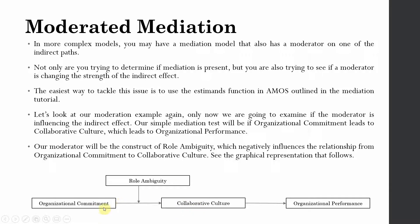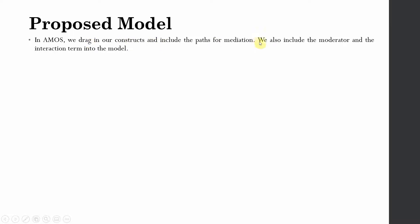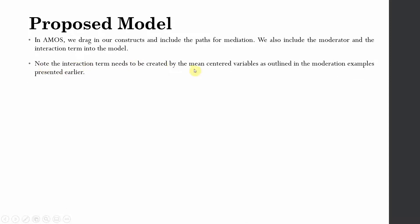My interest is to find out whether this moderator either strengthens or weakens the indirect effect. In AMOS, we drag our constructs and include the path for mediation, and also include the moderator and interaction term in the model. The process of moderation will remain the same — we will mean center our exogenous variables, that is our independent variable and our moderator variable, and then create an interaction term from the centered variables. The interaction term must be created using mean-centered variables, as outlined in our moderation examples.